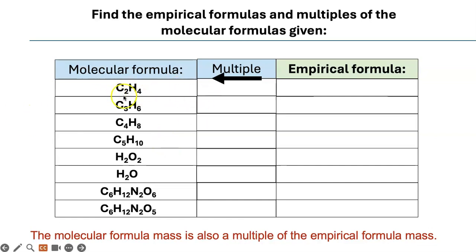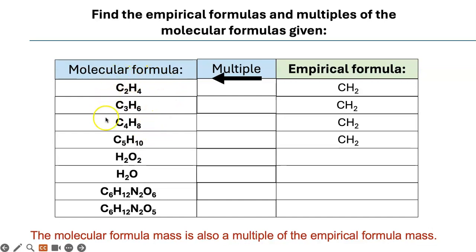This table is for you to understand what molecular and empirical formulas look like side by side. So what is the empirical formula for this? It's CH2. You divide them by 2. And this one is also CH2. This one is also CH2, and this one is also CH2. It's not always the case, but in this situation we have different molecular formulas all containing this same ratio of chemical elements. How about these two? This one is 1 to 1, and this one you can't divide further. So the molecular formula and the empirical formula are the same.